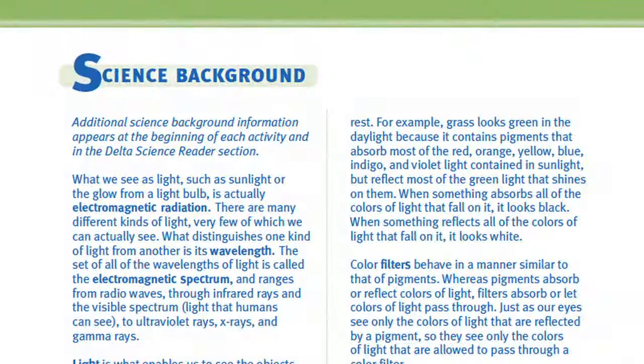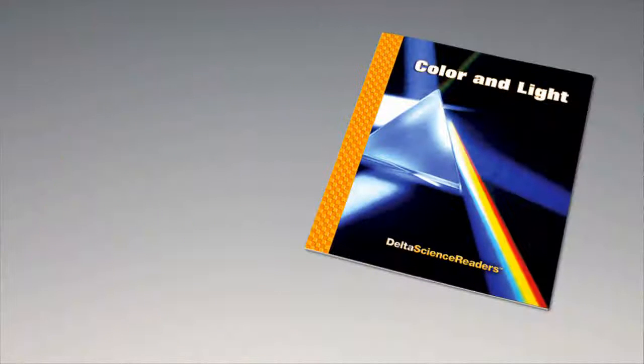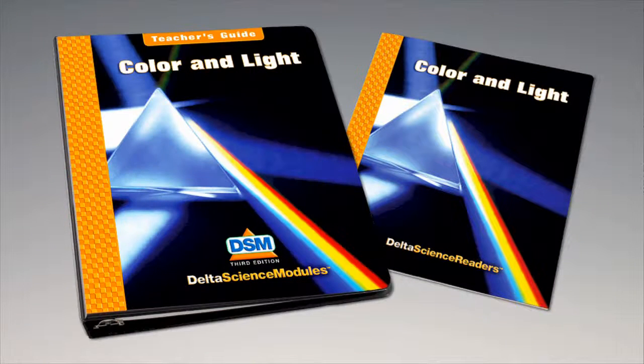To conclude the activity, leave the squares of frosted acetate taped to the flashlights for use in Activity 5. Place the color filters into the plastic reclosable bags, one color per bag. Return all the materials to the kit. For science background, reinforcement activities, curriculum connections, and information about the Delta Science Reader, please consult your DSM Teacher's Guide.